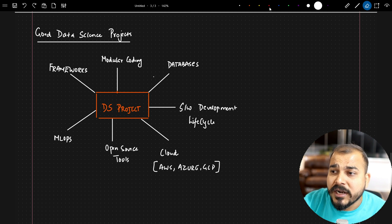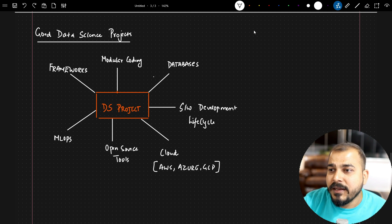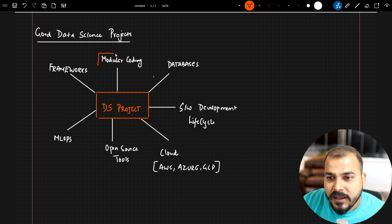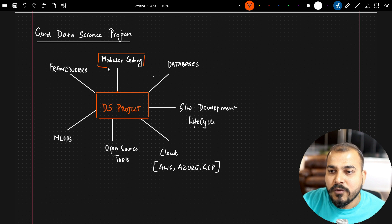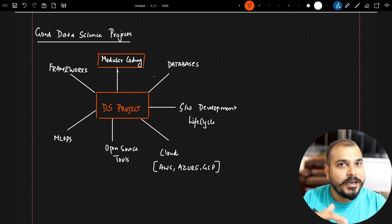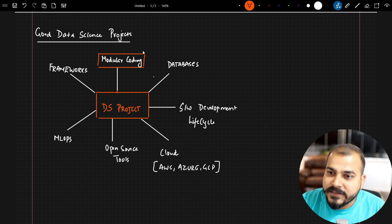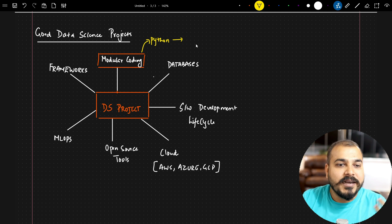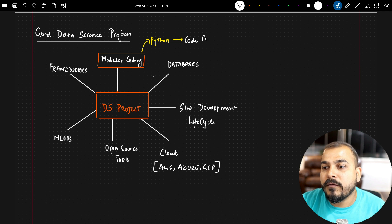The first and foremost important thing with respect to a data science project is modular coding. This is the basic necessity that is currently required. Many people are still just focusing on Jupyter Notebook, but the world is really competitive now. Using Python, I will use all features like classes, data abstraction, and encapsulation, and then try to solve the problem of code reusability.